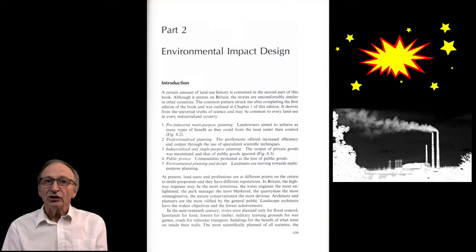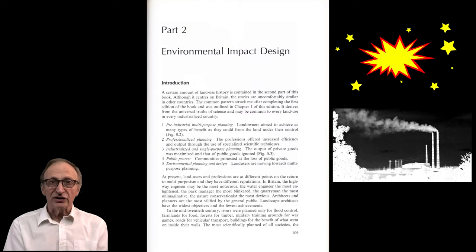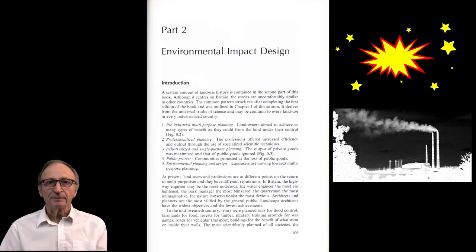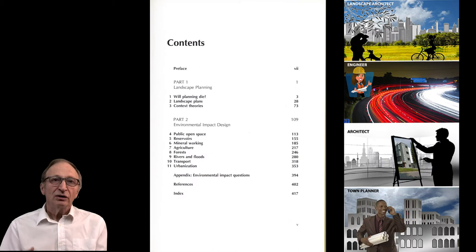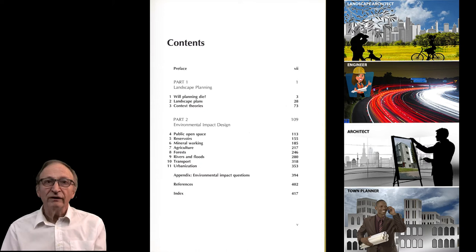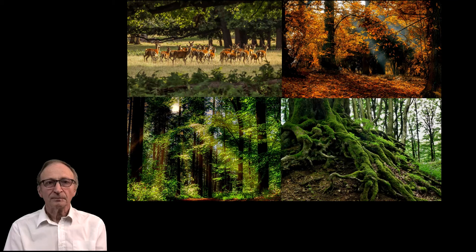Part two of the book dealt with development projects and the relationship between land owners' interests, which tend to be single objective, and those of the wider community, which tend to be multi-objective. So there were chapters on public open space, reservoirs, minerals, agriculture, forestry, rivers and floods, transport and urbanisation.